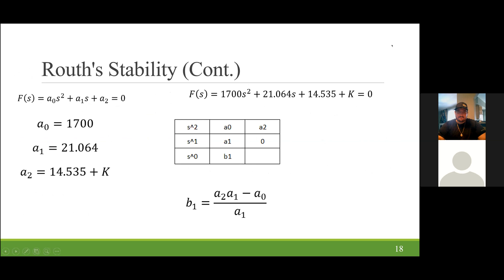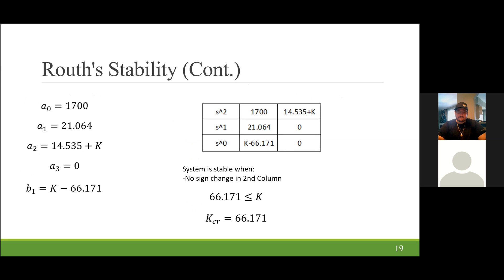From this function, we can set it into our general equation and start populating the Routh stability array. As you can see, the a0, a1, and a2 values coincide to the coefficients that are on our f of s function. So a0 is equal to 1700, a1 is equal to 21.064, and a2 is equal to 14.535 plus k. We do need to solve for b1. This can be solved by multiplying a2 times a1 minus a0 all over a1. So plugging in for b1, we get a value of k minus 66.171, and we start populating our array.